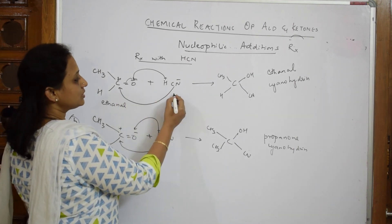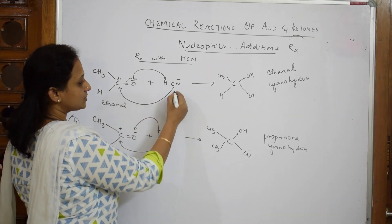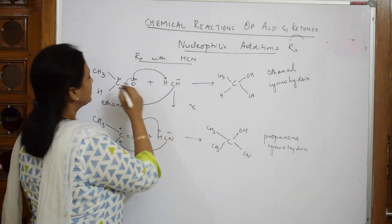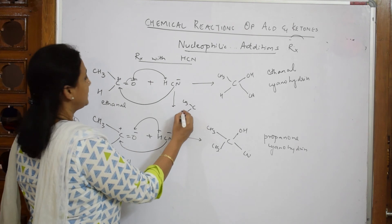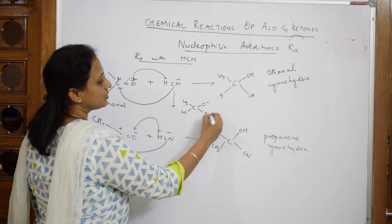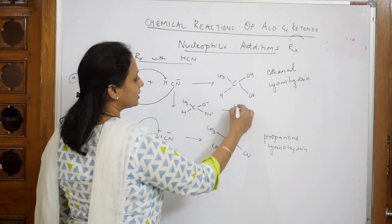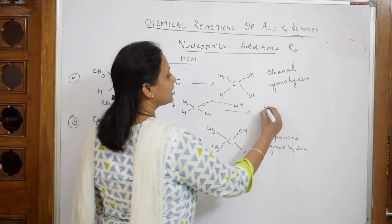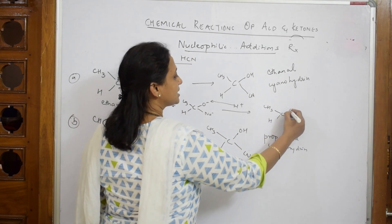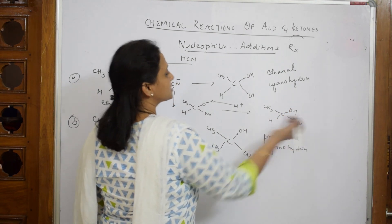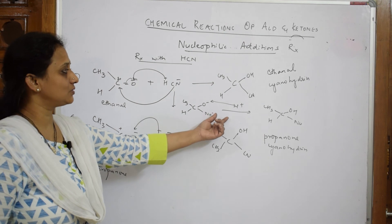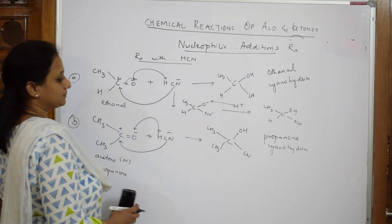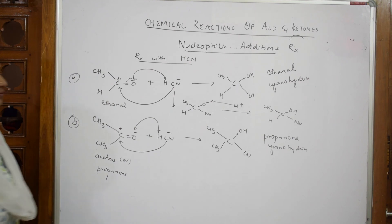If you want to show this step by step, first write the intermediate with O- and CN attached, then in the presence of H+, hydrogen will attack and you get cyanohydrin. Both products are the same, but here you're showing it stepwise. The mechanism is the same - anything will do. This is your cyanohydrin formation.